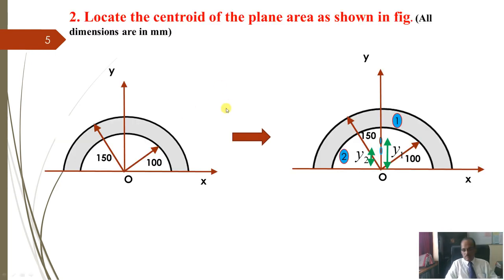This is one more problem which is same that this is the semicircular, semicircle and this circle is removed, this is removed. So, I will divide this, first I will take this entire semicircle like this, this complete, complete. And then, this part we will have to deduct, this part we will have to deduct. So, I will call this as a 1 and this as a 2.